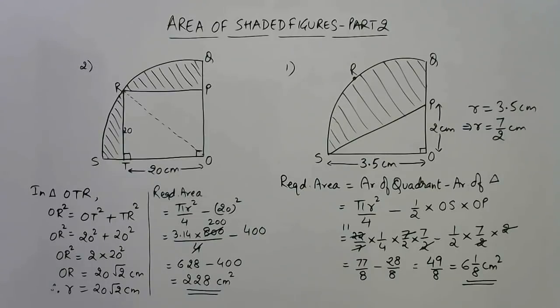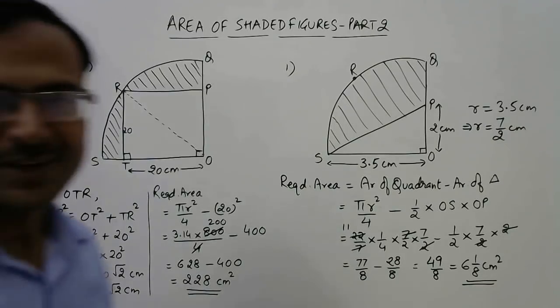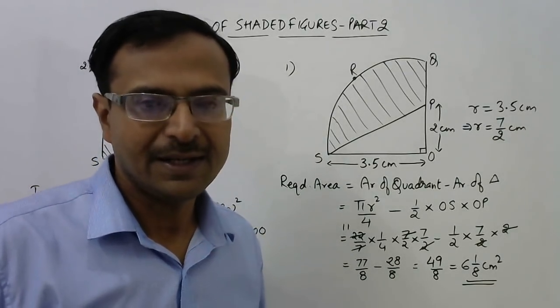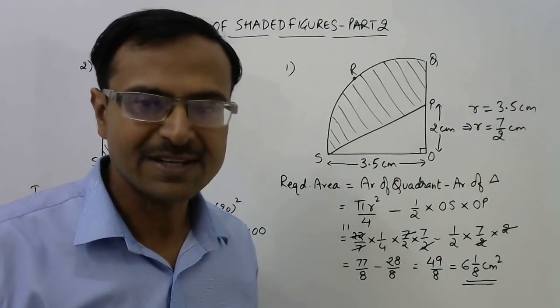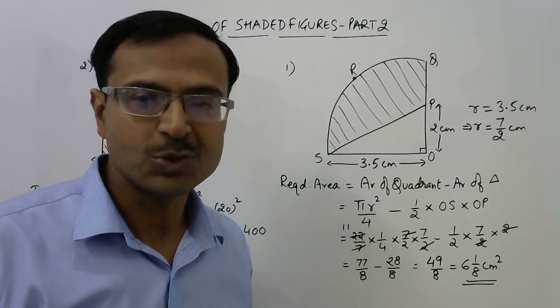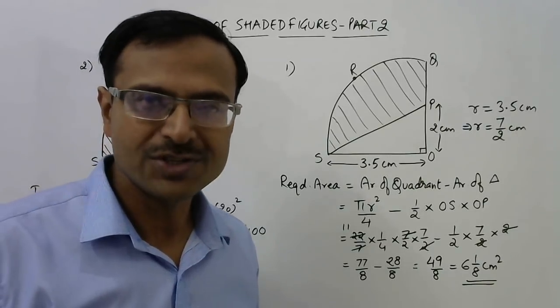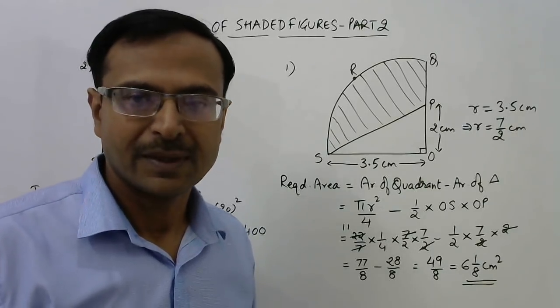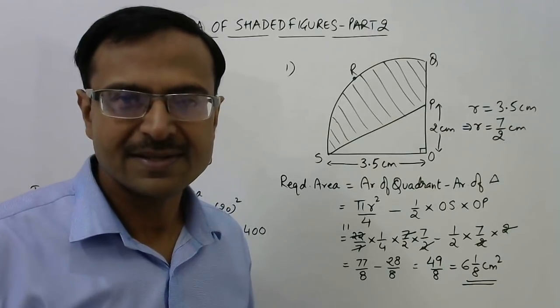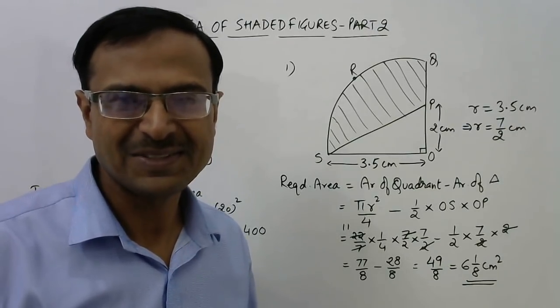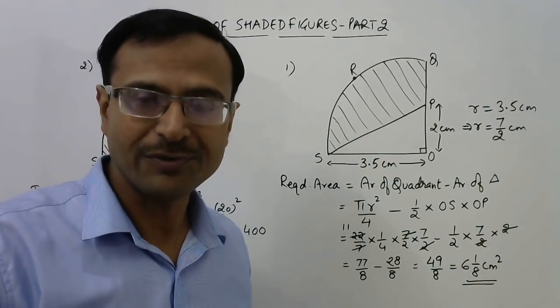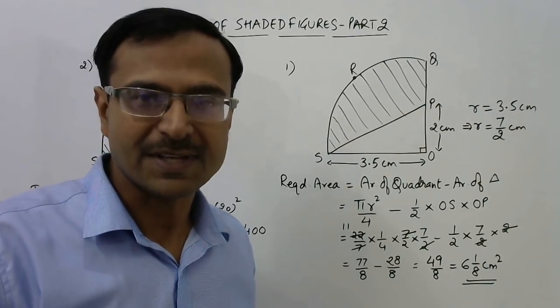So students, I hope that clears the doubt that whenever a part of a figure is shaded, then obviously we have to find the total area first and then subtract the area of that part which is unshaded. Friends, very important video for ninth and tenth class students. They have this chapter of area related to circles, so you can watch all the parts of the chapter to master this skill of finding the shaded area. If you like the video, do share it with your friends who are appearing in board exams, and subscribe to the channel.